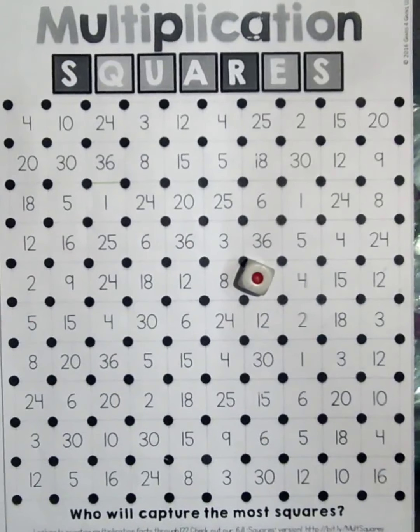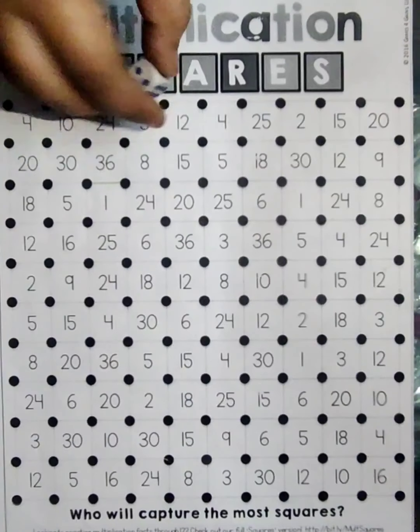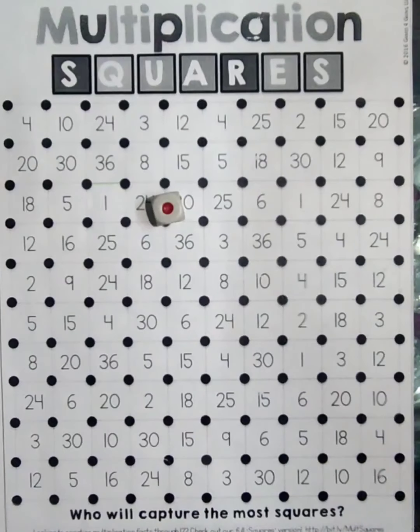Now my opponent player is going to roll the dice twice. She got two and then one, so two times one is two. She will look where this two is written and she will simply join her line.